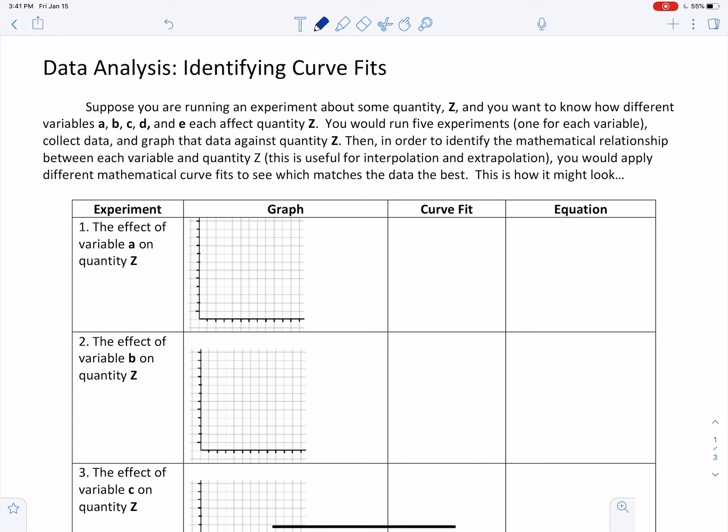You would run five experiments, one for each variable. You would collect data and you would graph that data against quantity Z. Then in order to identify the mathematical relationship between each variable and quantity Z, and by the way this is useful for interpolation and extrapolation, you would apply different mathematical curve fits to see which matches the data the best. And so this is how it might look.